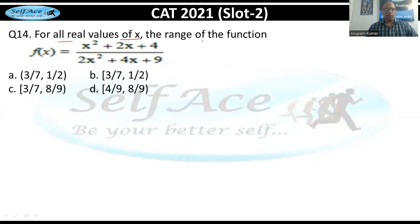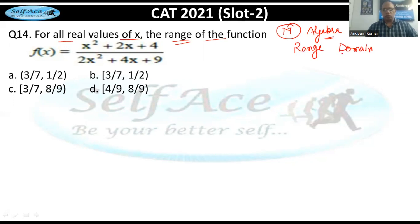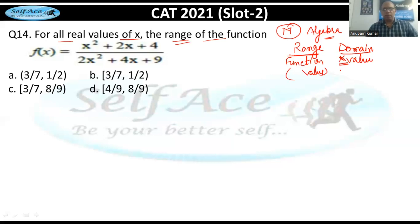Next question: find the range of the function f(x) = (x²+2x+4)/(2x²+4x+9) for all real values of x. This is a medium to difficult level question from advanced algebra. Remember: domain is the set of x-values you can input, and range is the set of output values the function can take.